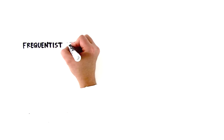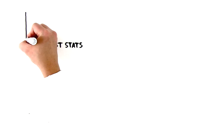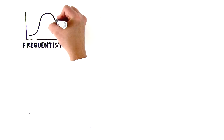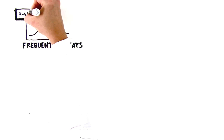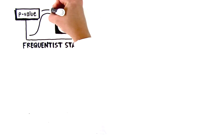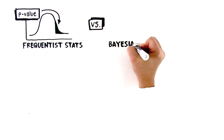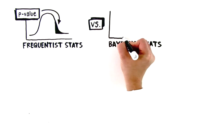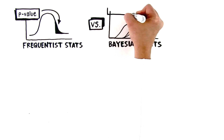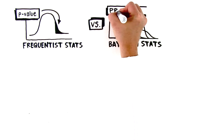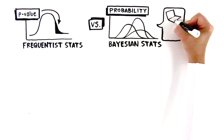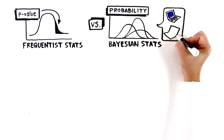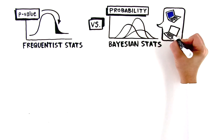You see, traditional A/B testing tools based on frequentist statistics can only tell you how often you will see your current results purely by chance. That's the p-value, and it's commonly misinterpreted as probability. SmartStats, on the other hand, uses Bayesian statistics, which can finally answer the real question: what is the probability of your new web page performing better than your existing web page?